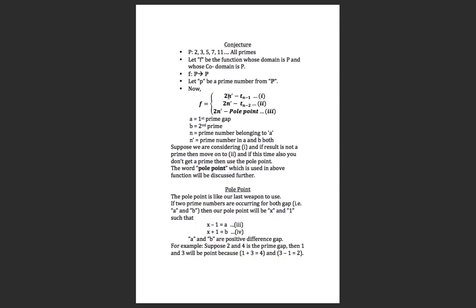Let me show you how the conjecture works. Suppose you have a function given on the screen: 2n' minus 3n minus 1, 2n' minus 3n minus 2, and 2n' minus pole point. Before giving further introduction to the function, let me introduce the variables used further in this video.